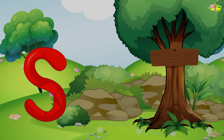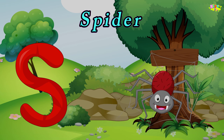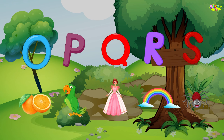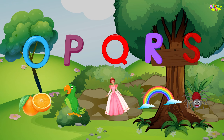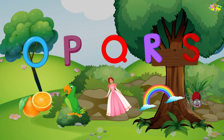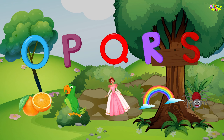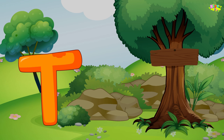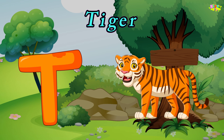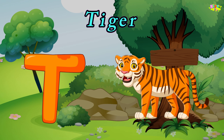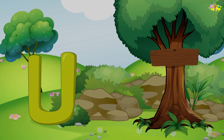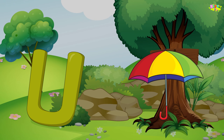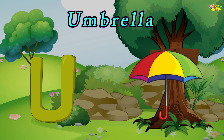S is for spider. Spider, spider. S, spider. T is for tiger. T, tiger. T, tiger. U is for umbrella. U, U, umbrella. U, U, umbrella.